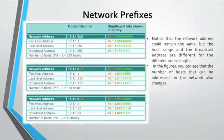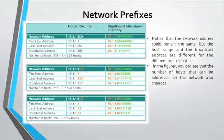Network prefixes: the prefix length is another way of expressing the subnet mask. The prefix length is the number of bits set to 1 in the subnet mask, written in slash notation — a slash followed by the number of bits set to 1. For example, if the subnet mask is 255.255.255.0, there are 24 bits set to 1 in the binary version of the subnet mask, so the prefix length is 24 bits, or /24. The prefix and the subnet mask are different ways of representing the same thing: the network portion of an address.